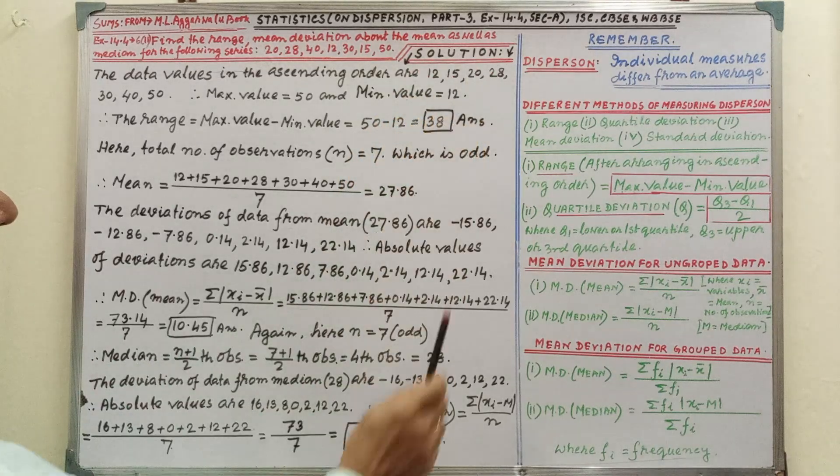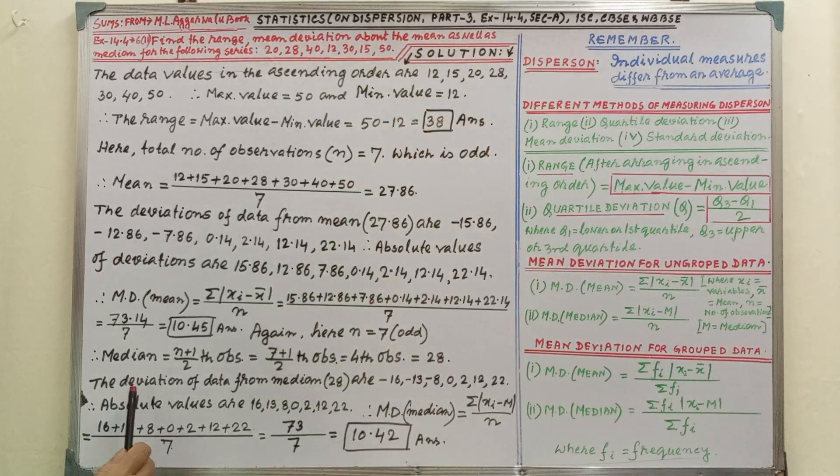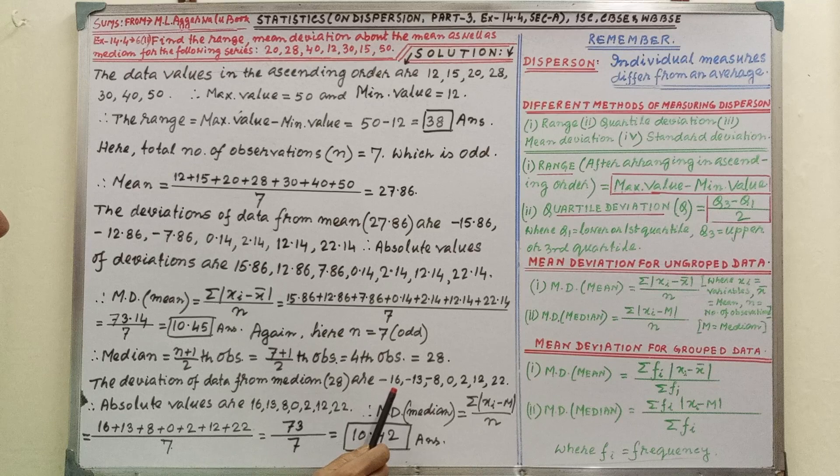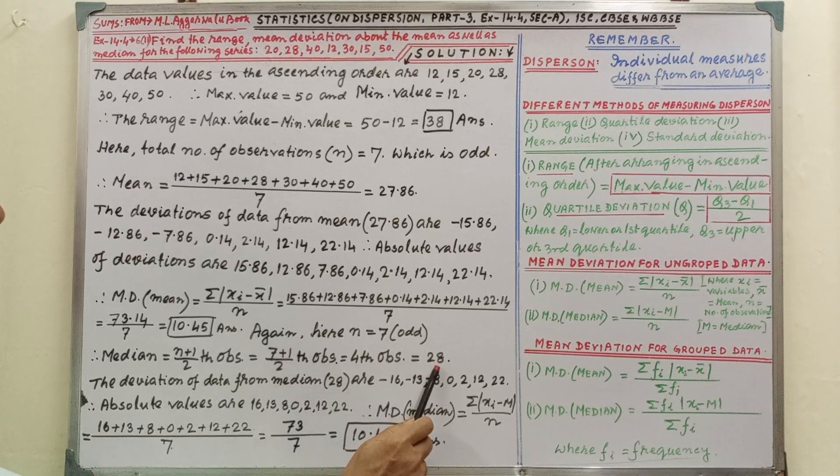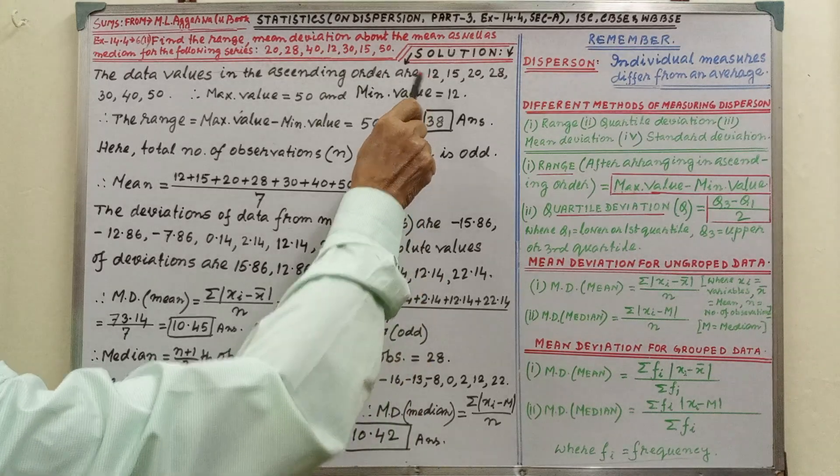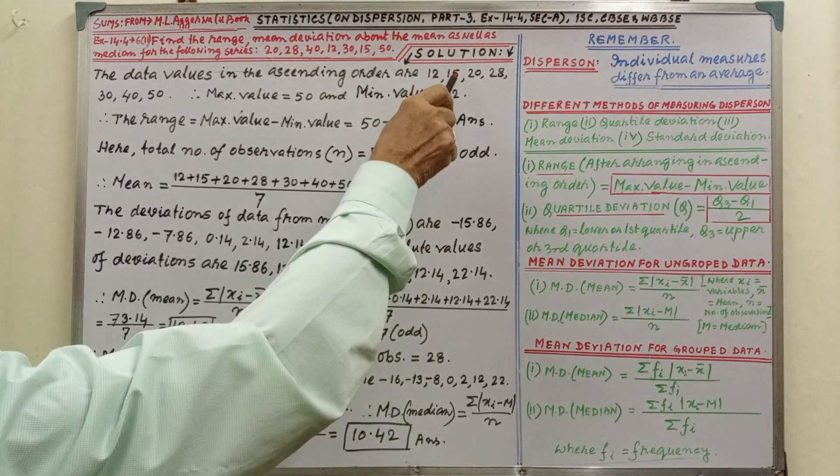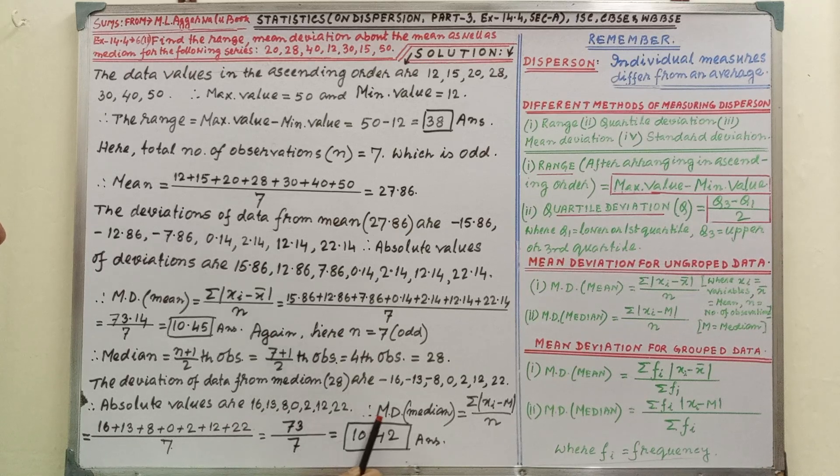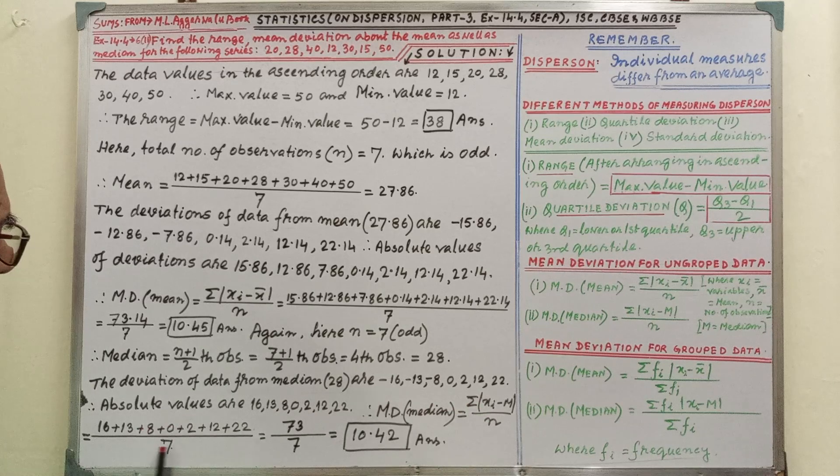The deviation data from the median that is 28, same thing we have to do here. 28 minus 12, 28 minus 13, in this way we are getting this, and absolute values all will be positive. Therefore median equal to by writing the formula and putting the values and simplifying we are getting 10.42, this is the answer.